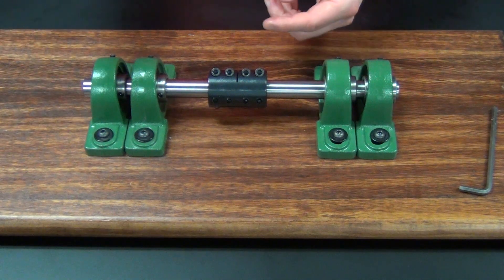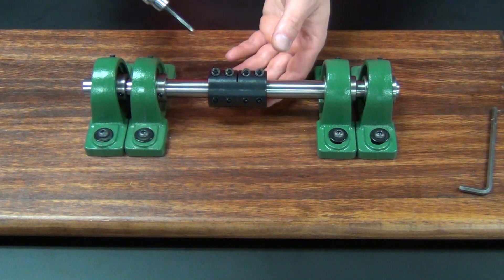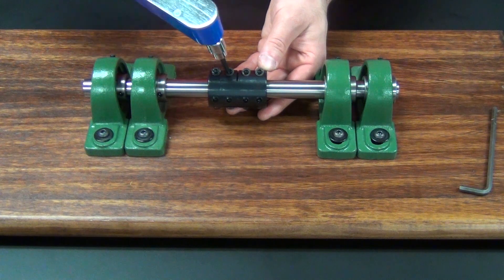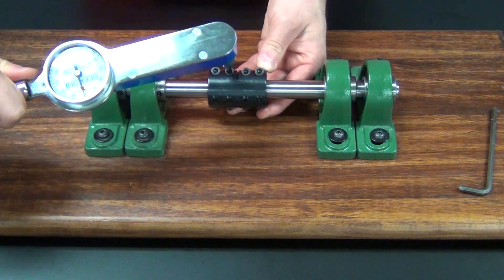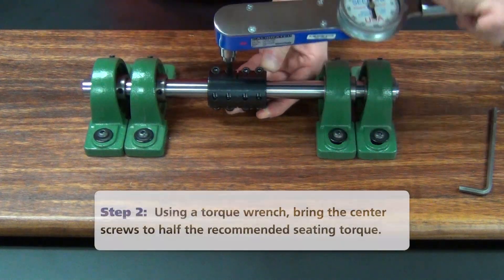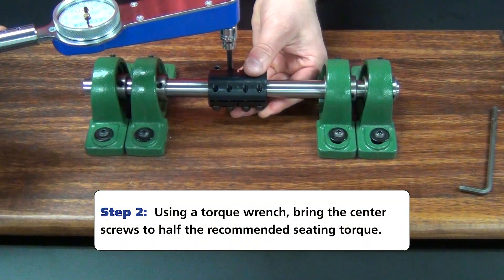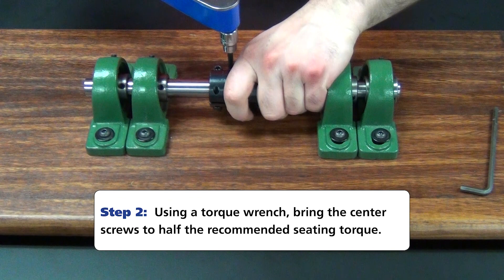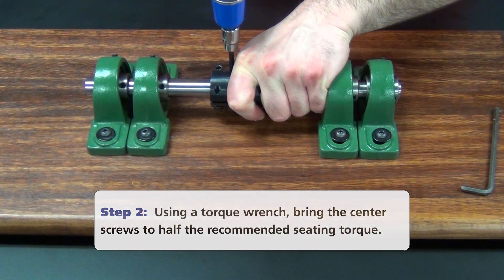So now I'll begin the precision part of the installation. I'm going to start by installing the two middle screws on both sides to half the recommended seating torque, which in this case is 85 inch-pounds.